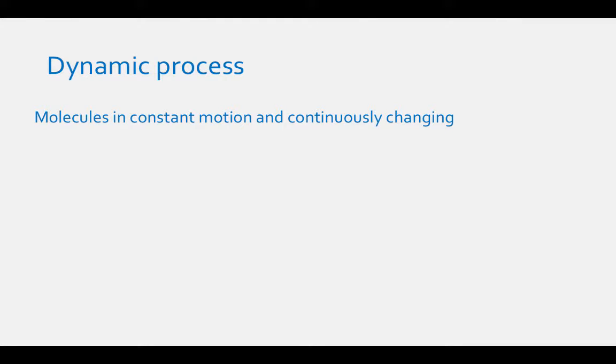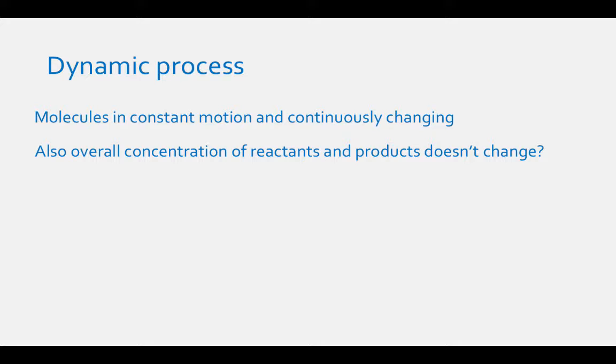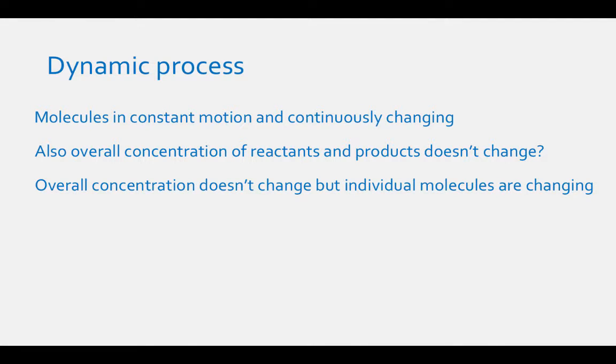When we say that chemical equilibrium is a dynamic process, we mean that the molecules of the reaction are in constant motion and are continuously changing. But we also said that chemical equilibrium means that the overall concentrations of reactants and products are not changing. The overall concentrations of reactants and products are not changing when a reaction is at equilibrium, but the individual molecules may be changing from products to reactants or from reactants to products.